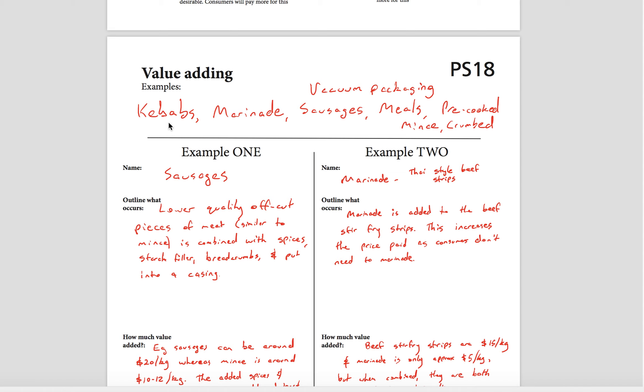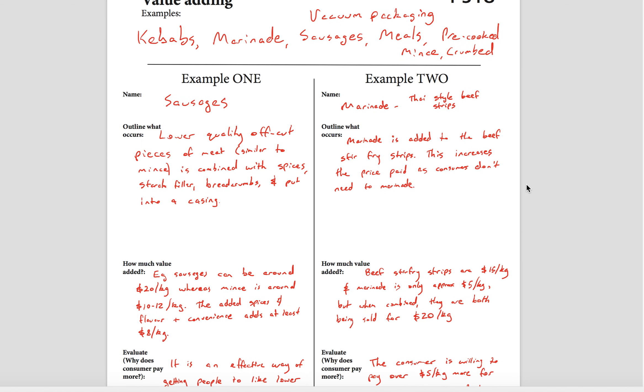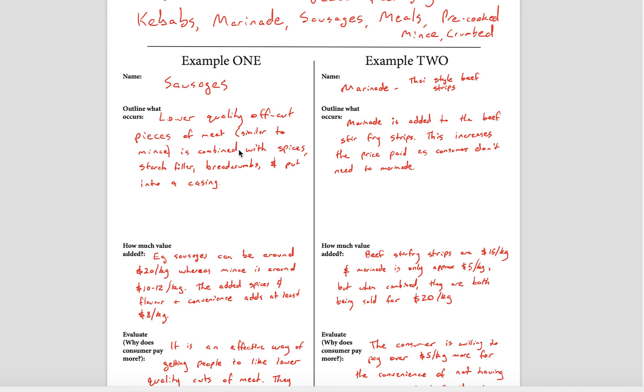In terms of value-adding examples, we've got here kebabs, marinade, sausages, vacuum packing, pre-made meals, pre-cooked mince, crumbed things, schnitzels and stuff like that. I've given two examples here which I've researched.